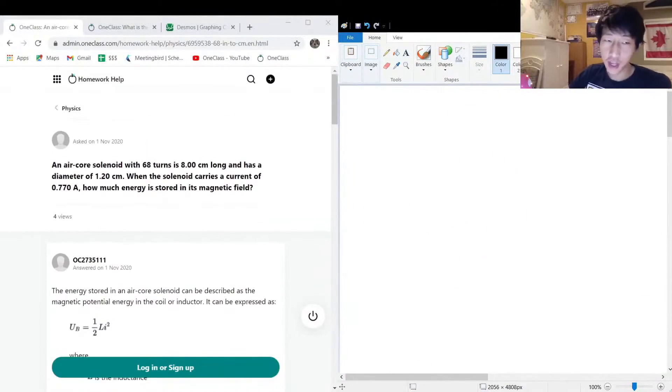So the next question that we got here is if we have an air core solenoid with 68 turns that is 8 centimeters long and has a diameter of 1.2 centimeters, and when the solenoid carries a current of 770 milliamps, how much energy is stored in its electric field? So there's a lot to unpack here.